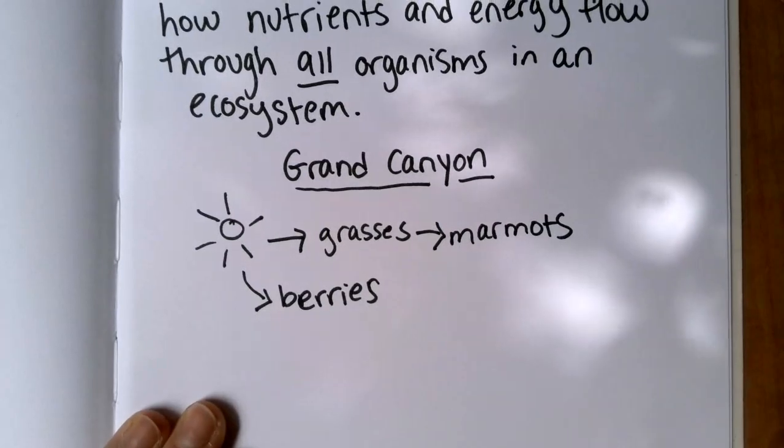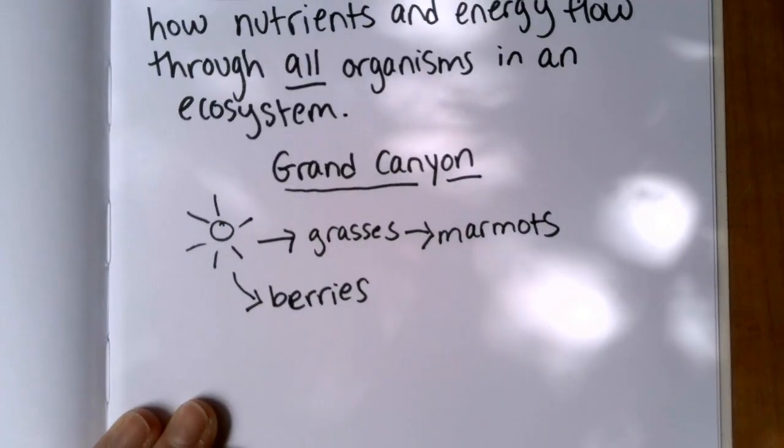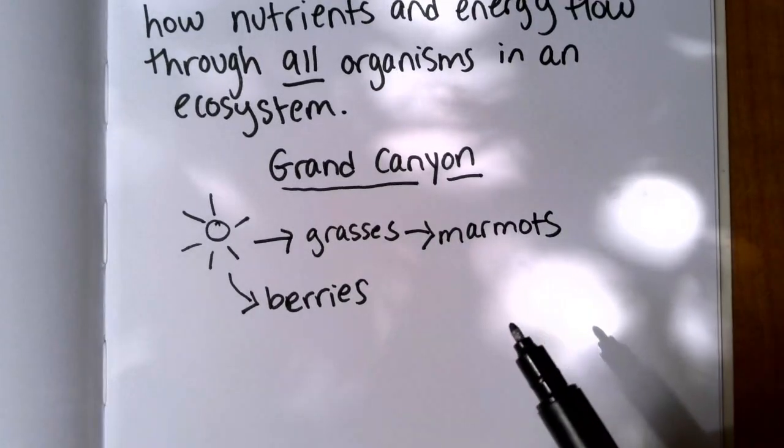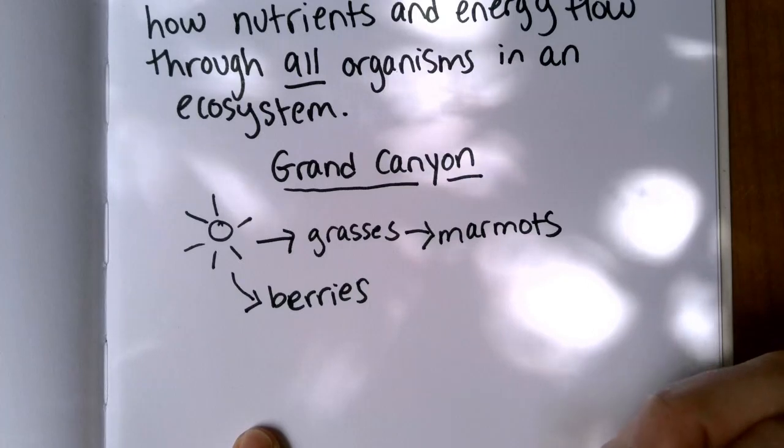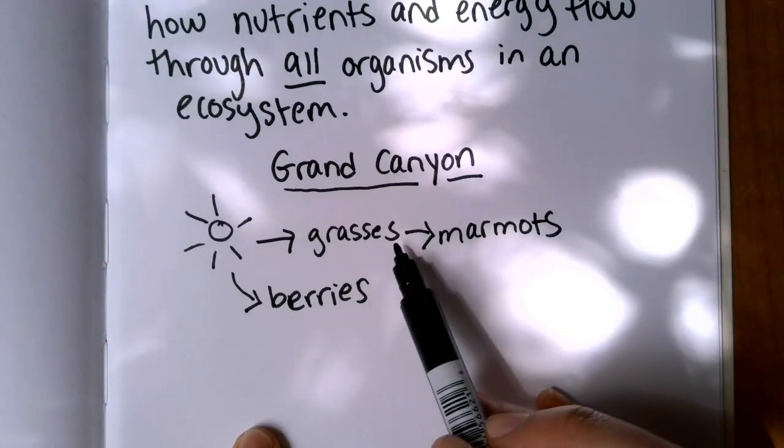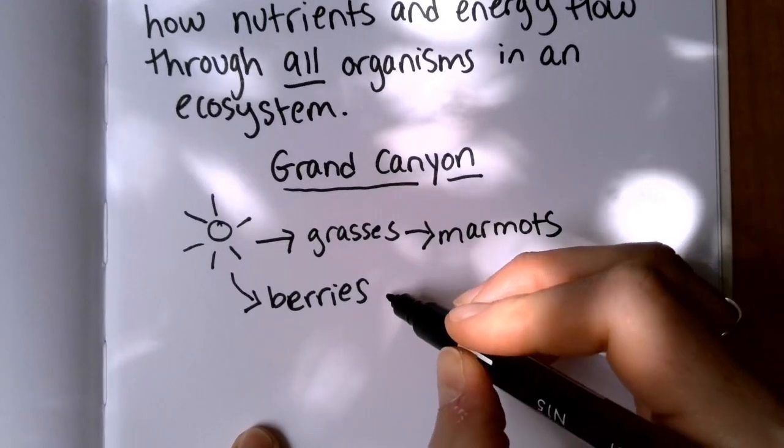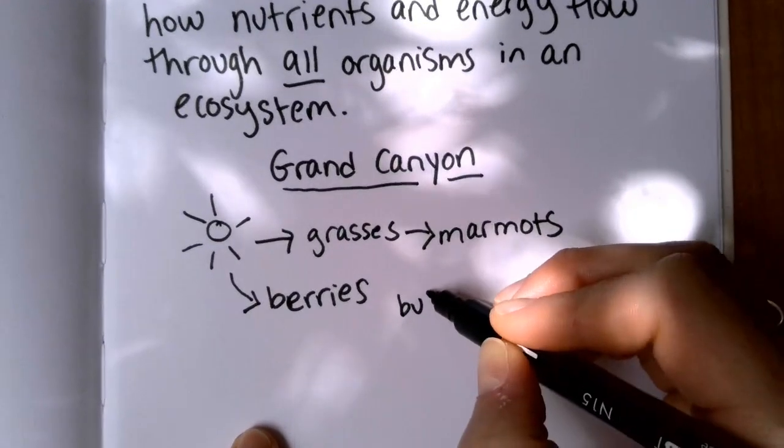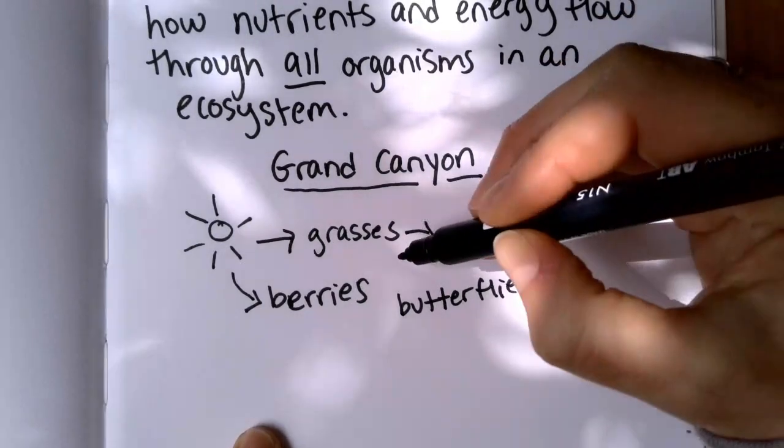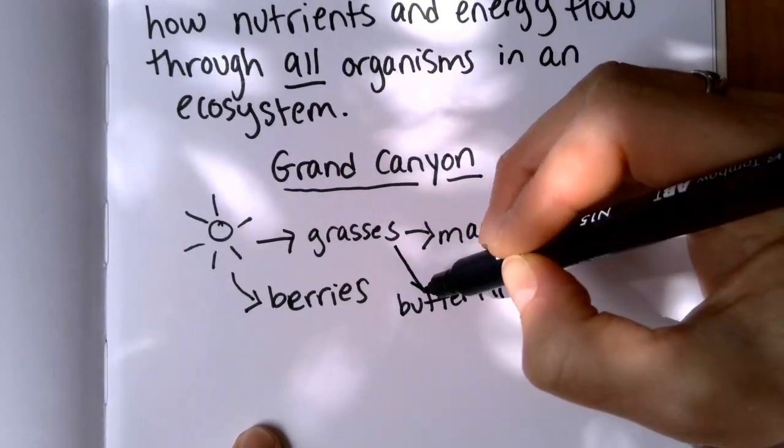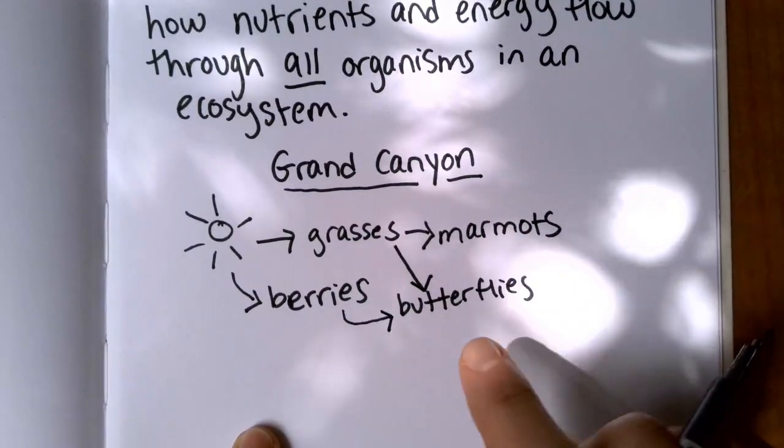The next consumer listed on the slide is butterflies, and it says that butterflies eat both grasses and berries. So when I'm thinking of drawing this, I may draw butterflies somewhere in between the two. And then I'm going to draw an arrow from grasses to butterflies and from berries to butterflies. So this right here is showing that the butterflies are getting their energy from two different types of plants.